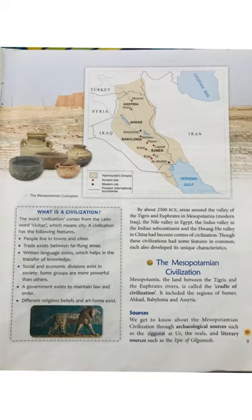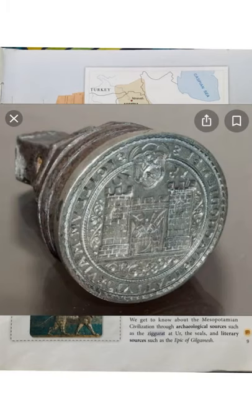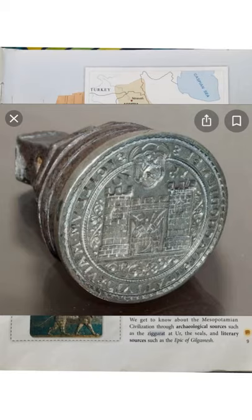A seal is a device for making an impression in wax, clay, or paper. Today also you must have seen stamping — people stamp documents to authenticate them. The purpose was to authenticate a document, such as a modern envelope. Different civilizations had different images on their seals, and the seals revealed a lot about their culture.